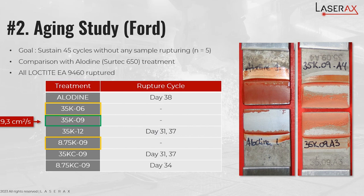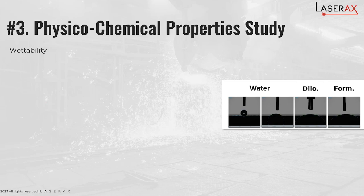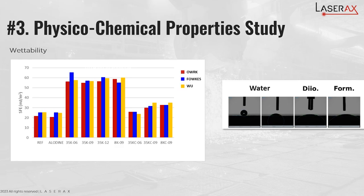Now that we had that information, we wanted to understand why those textures performed better than the others. So we went into the third phase of the study — physical chemical property studies — to understand the properties of each surface. The first thing we did was a wettability test using the three-liquid droplet method. Basically, you put droplets of three different liquids on the surface — water, diiodomethane, and formamide — and measure the contact angle of each droplet on the surface. Through mathematical calculations, you can determine the surface-free energy. The more surface-free energy you have, the better adhesion you're going to get. The good performing recipes achieved a much higher surface-free energy, and we can actually see that by removing the oxide on the surface, we are reducing that free energy.